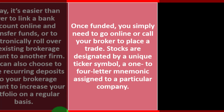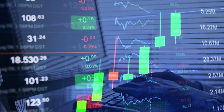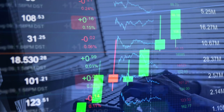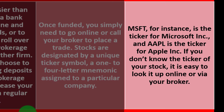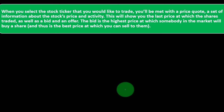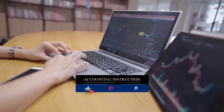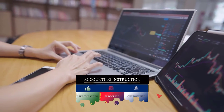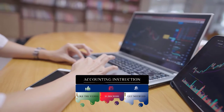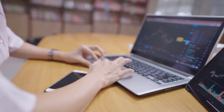Stocks are designated by a unique ticker symbol — a one-to-four letter mnemonic assigned to a particular company. For example, MSFT is the ticker for Microsoft Incorporated and AAPL is the ticker for Apple Incorporated. You can easily look up any ticker online or via your brokerage. When you select the stock ticker you'd like to trade, you'll be met with a price quote — information about the stock's price and activity, reflecting what the shares have been trading for on the exchange.